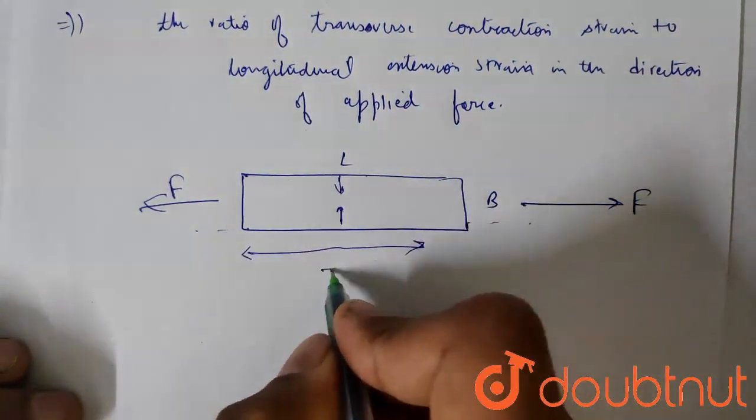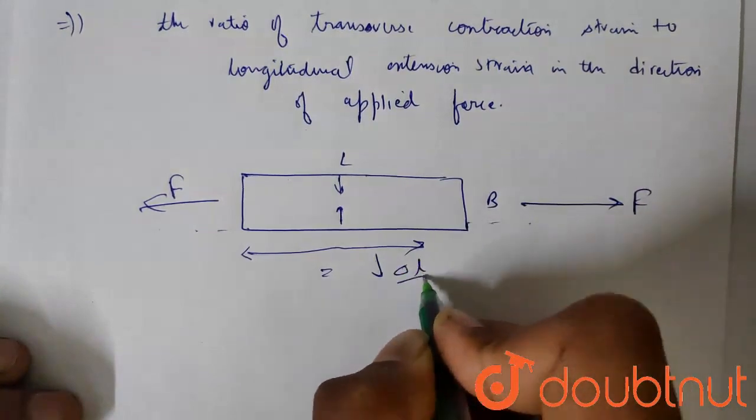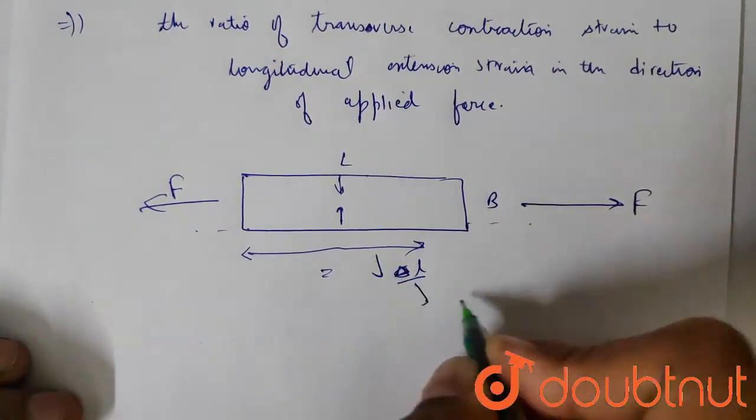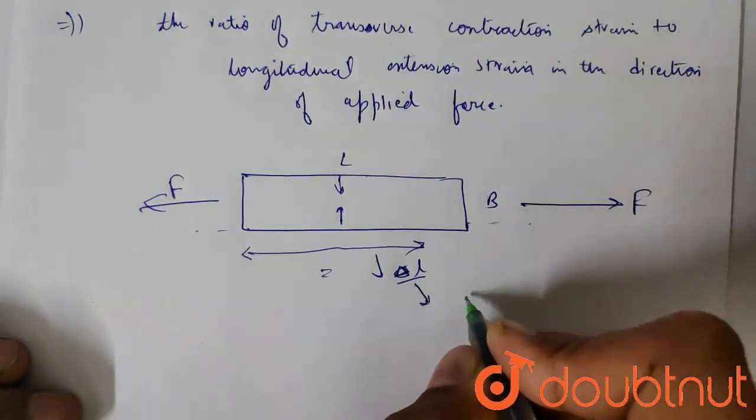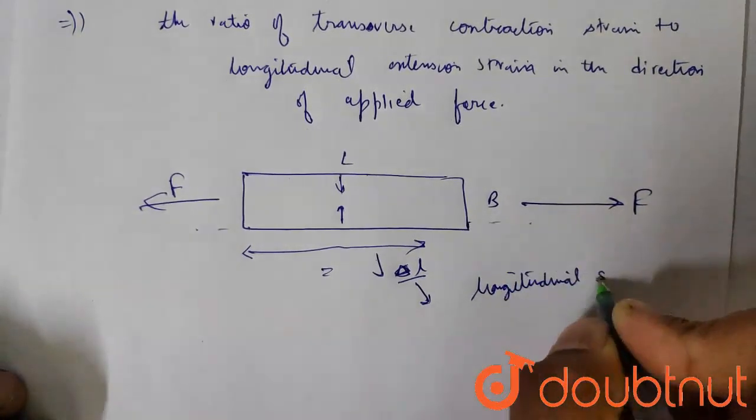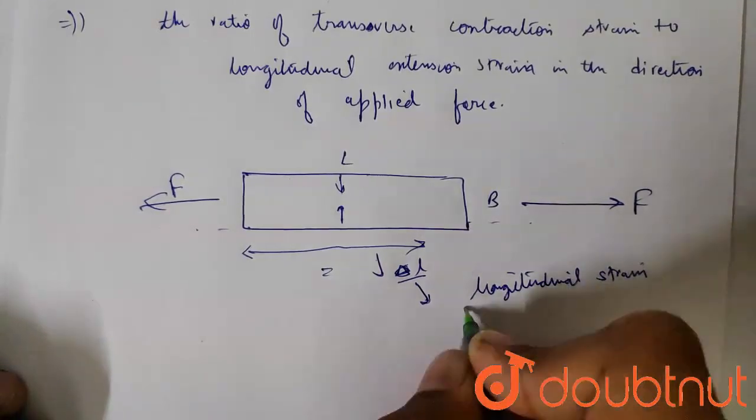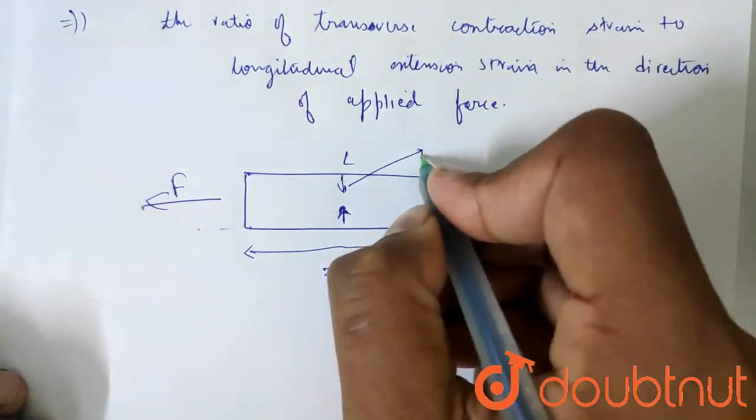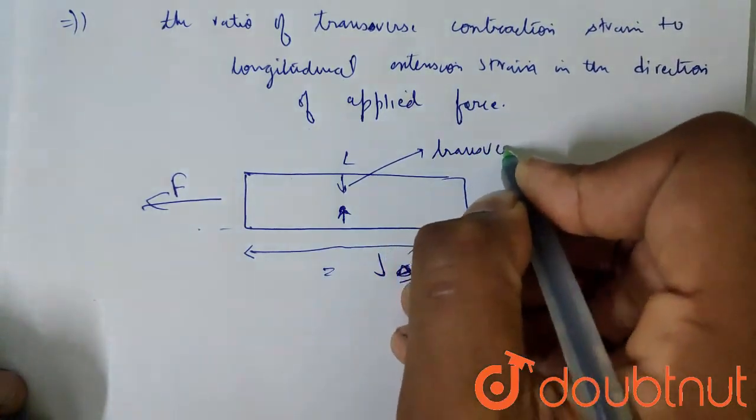In the direction of applied force, the delta L deformation is the longitudinal strain, and the strain produced in the perpendicular direction is the transverse strain.